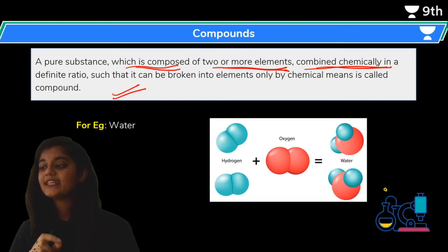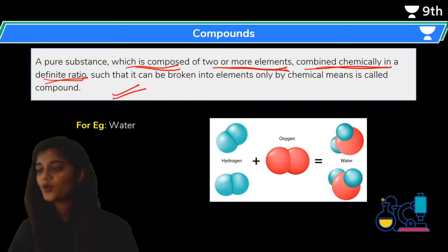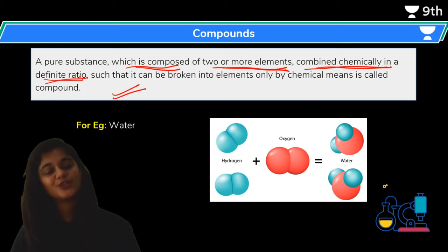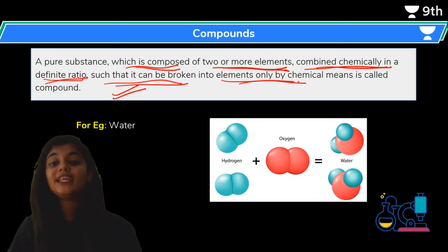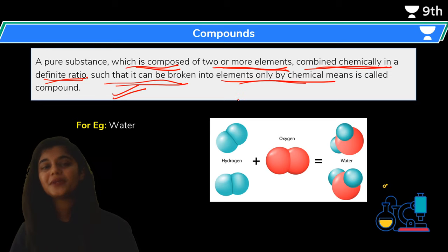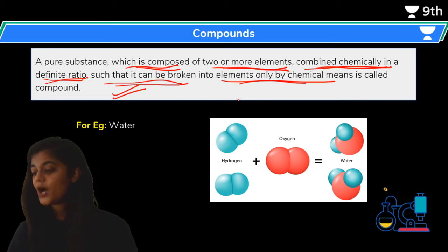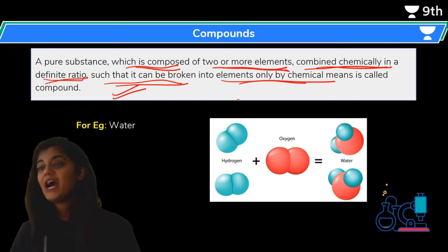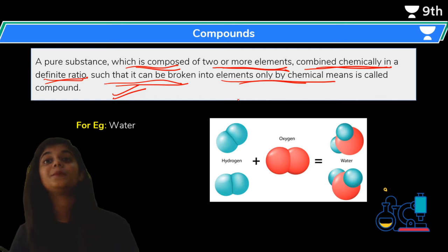In a compound, the combination of elements is fixed and in a definite proportion, combined such that it can be broken only by chemical means. Elements cannot be broken down by any physical means. Compounds, if you have to break them down — since they are made up of two or more elements — you can break them down, but only by chemical means.